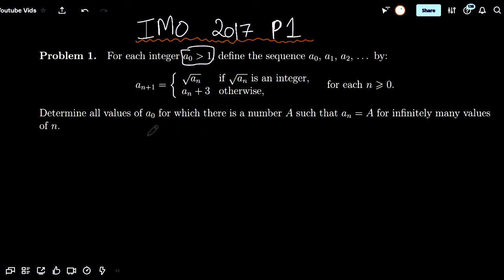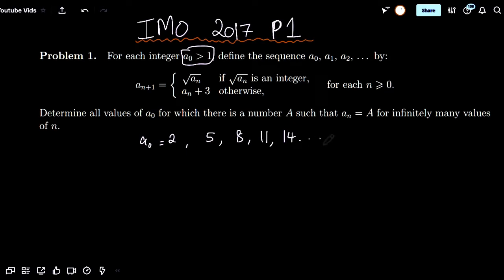An example would be if I had a0 equals 2. It's not a square, so I add 3, I get 5. This is not a square, so I add 3 again and I get 8. Not a square, add 3, not a square, add 3, and so on.